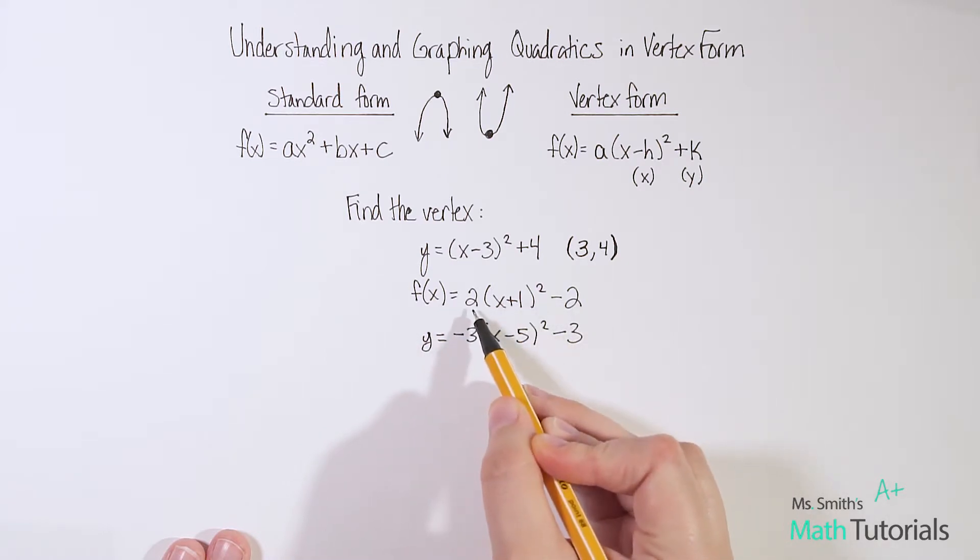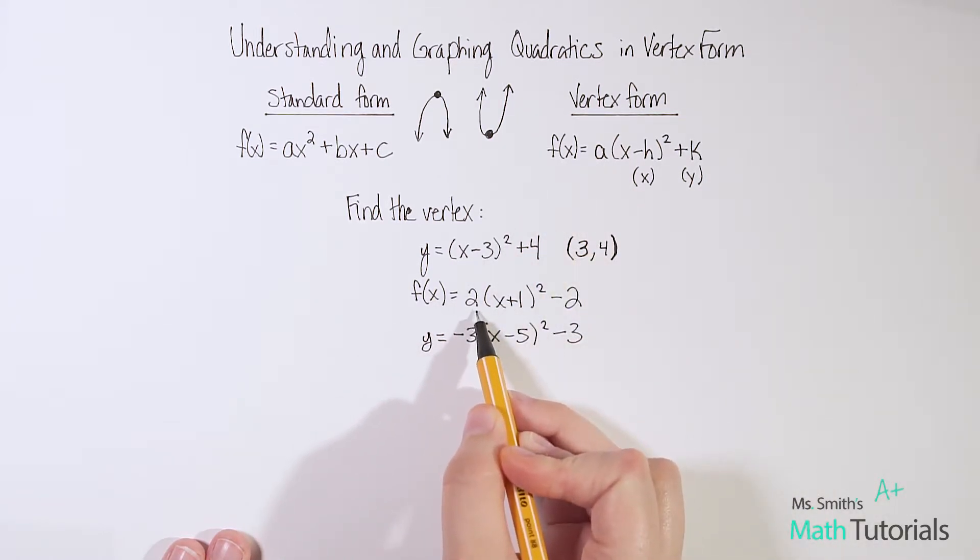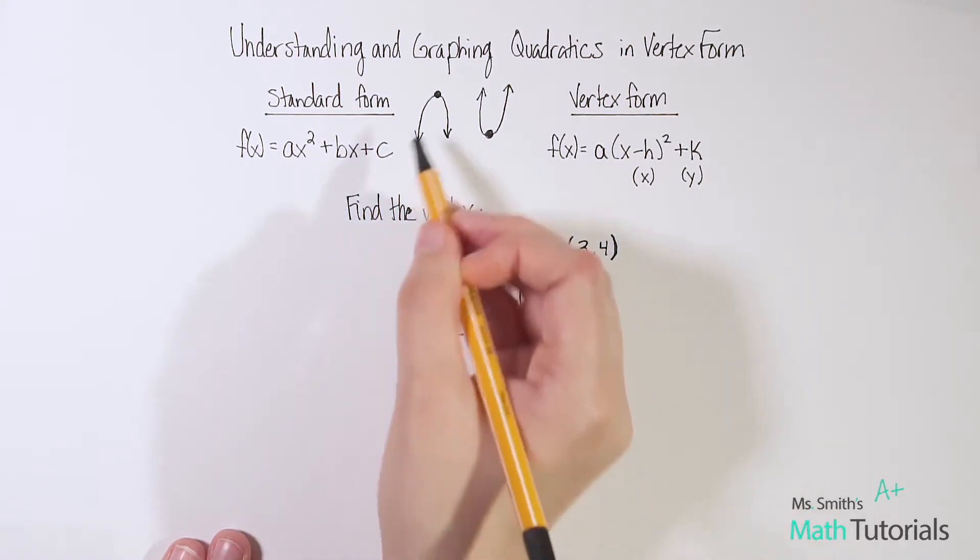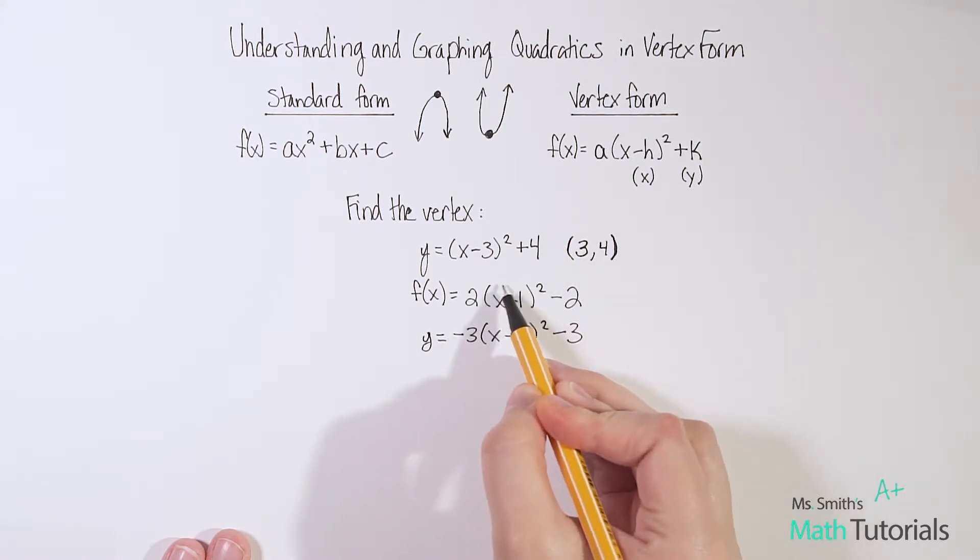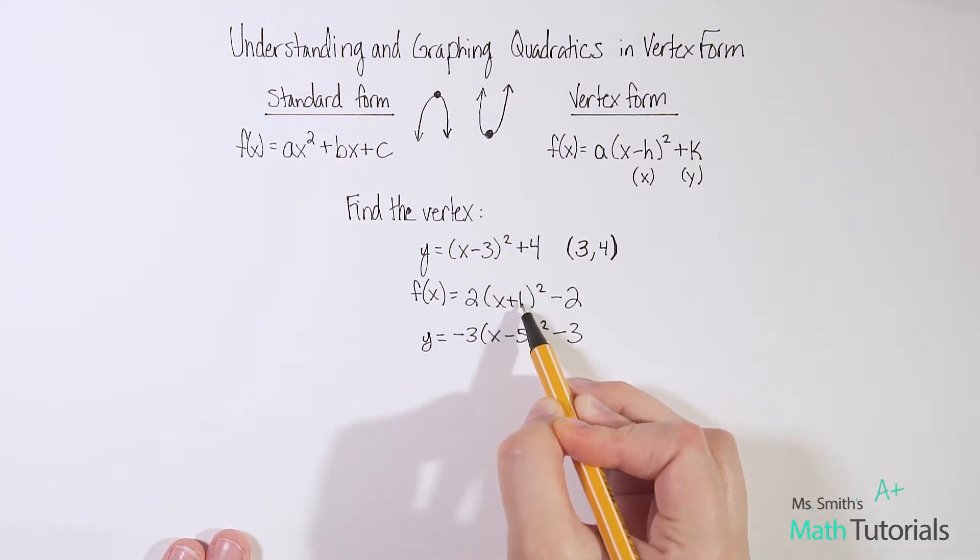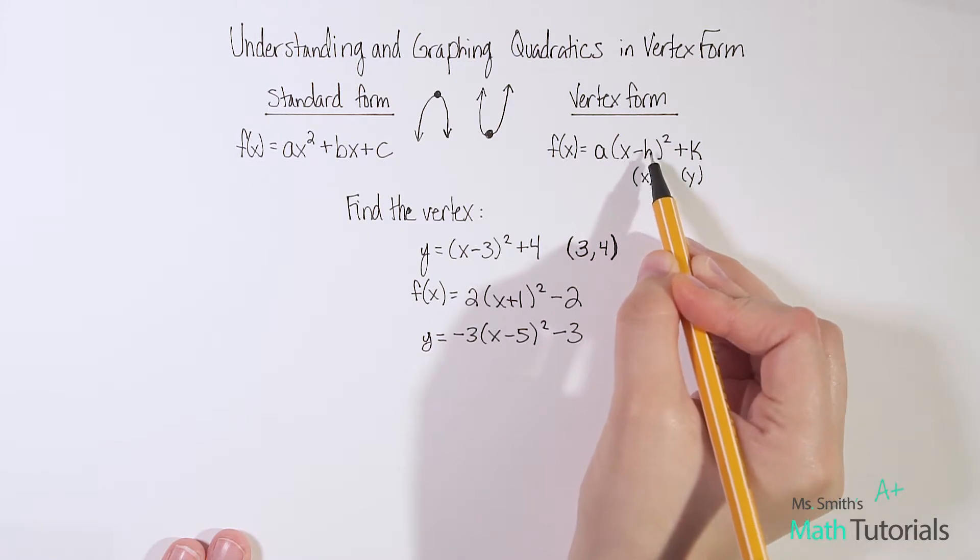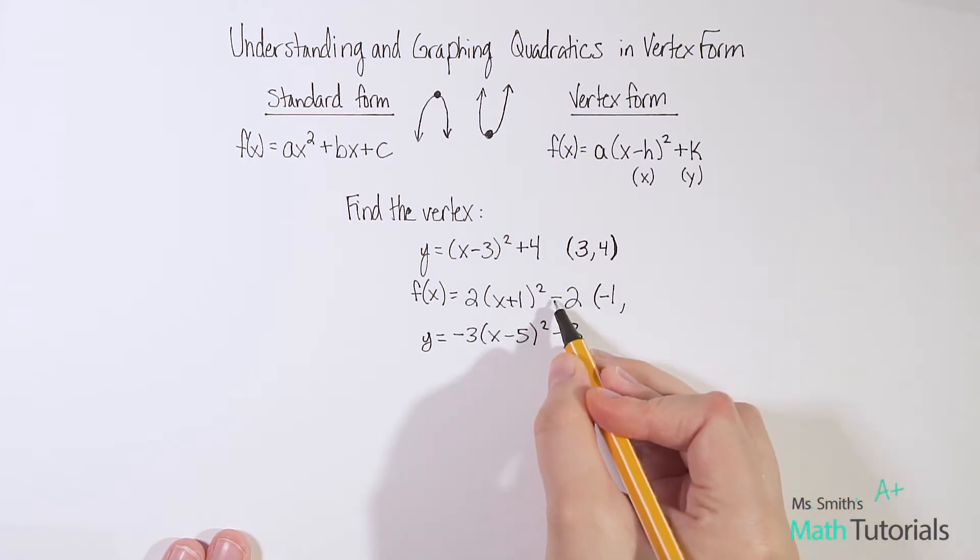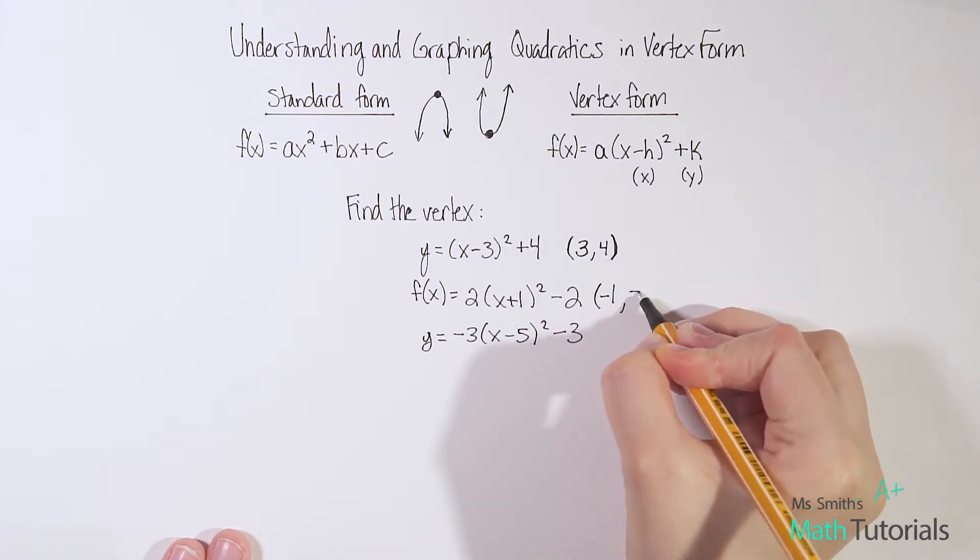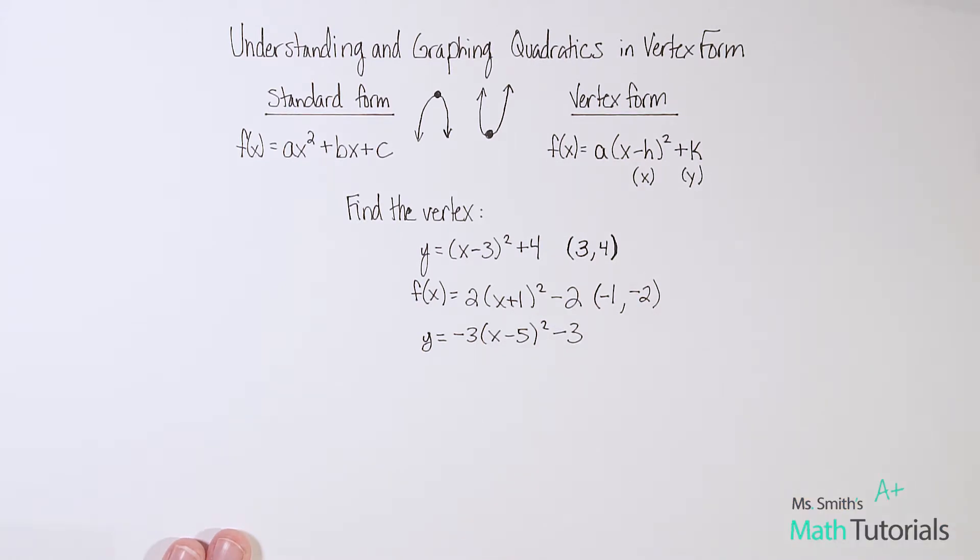Let's look at this next example. So notice I do have an a value here, it's 2. That's not going to affect my vertex at all, though. That would affect when I'm actually graphing how I would graph it. We'll get into more what that 2 does when we talk about transformations of quadratics. But for now, I just want to know the vertex. So remember, your x value is the one on the inside with the x. So in this case, it's plus 1. And remember, we said it's the opposite sign. So we're going to call it negative 1. On the outside is a negative 2. So our y value is negative 2.